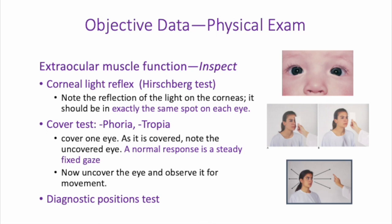Perform the same cover test on the other eye. Tropia is a misalignment of the two eyes when the patient is looking with both eyes uncovered. Phoria is a latent deviation — you'll only see it with binocular viewing being disrupted — where the eyes are not looking at the same object.